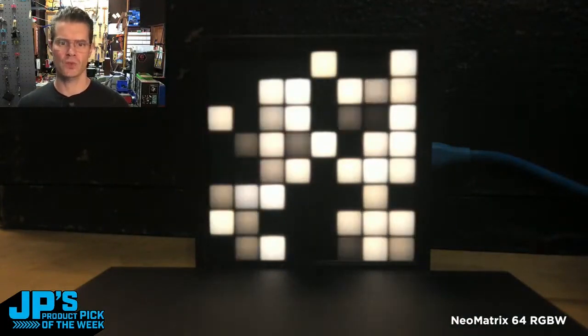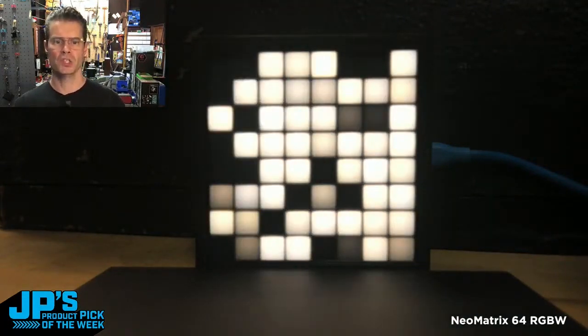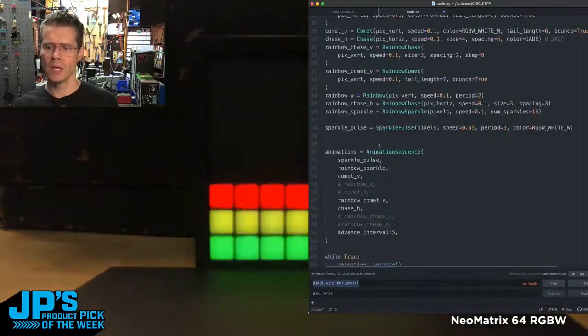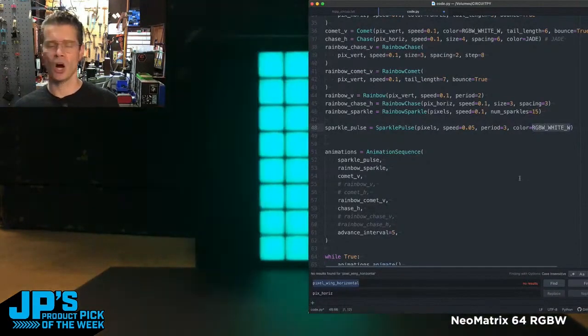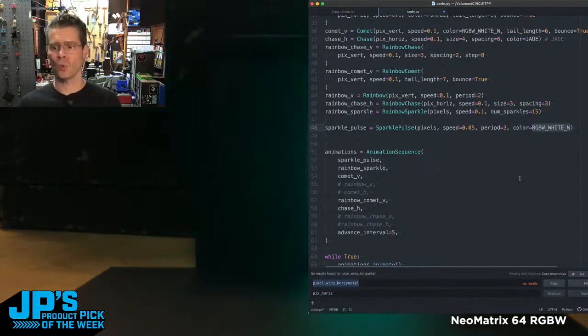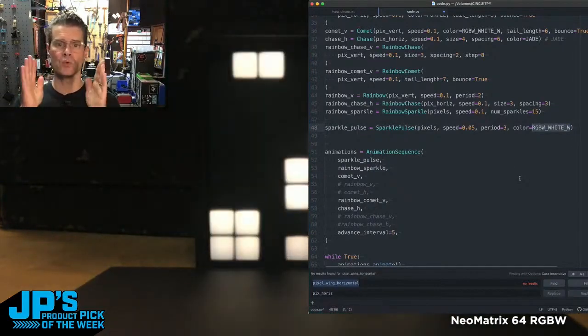And here's a really nice one, this is the pulse sparkle. You'll see I've got this line right here. For some of the colors I'm using RGB_WHITE_W, and that allows me to specify just that white diode.